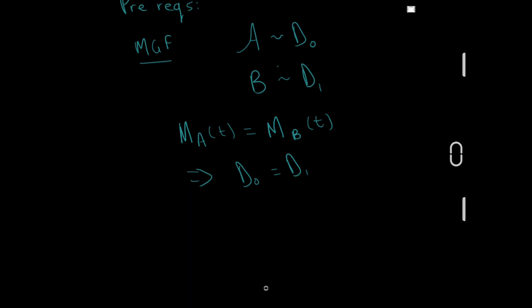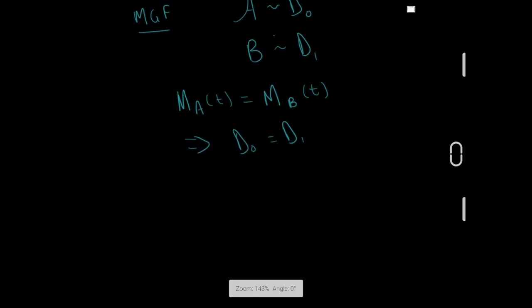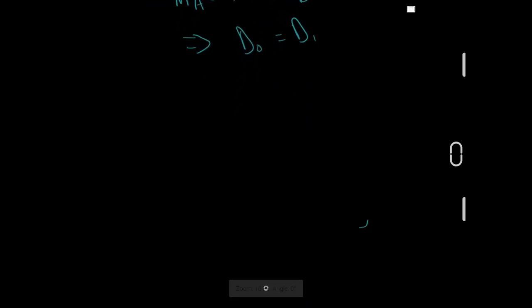This is called the uniqueness theorem. Basically, all it means is that when you take the MGF of some statistic and find that it equals an MGF you recognize, you can then say that the statistic has the distribution whose MGF you recognized. That's the first prerequisite. Then there's another prereq.